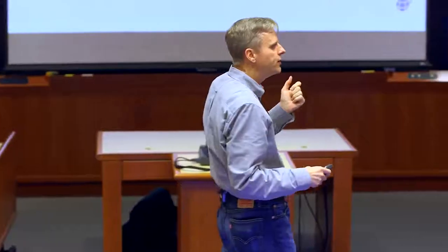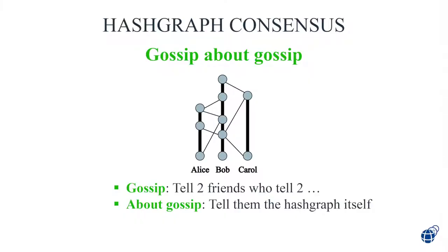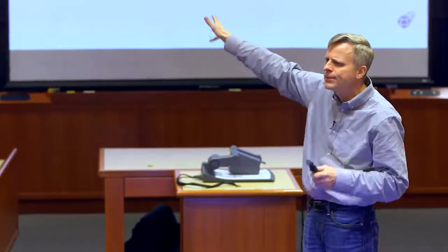Now, we can gossip about transactions, identities, or information we find interesting. But what if we were to gossip about gossip? What if we were to gossip about what we know about this very picture — the record of how we gossiped? In other words, when I call you, I give you everything I know: I give you all the pieces of this very picture that I know. That's weird — very recursive, self-referential. We are going to gossip about the picture where the picture is the record of how we gossiped.